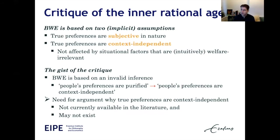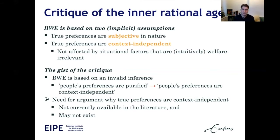Thaler and Sunstein, proponents of libertarian paternalism, like to discuss the cafeteria problem. In the cafeteria problem, people's choice of different food items is at least partially affected by how prominently different items are displayed. So if apples are displayed at eye level, people tend to choose apples; if cake is instead displayed at eye level, people tend to choose more cake.